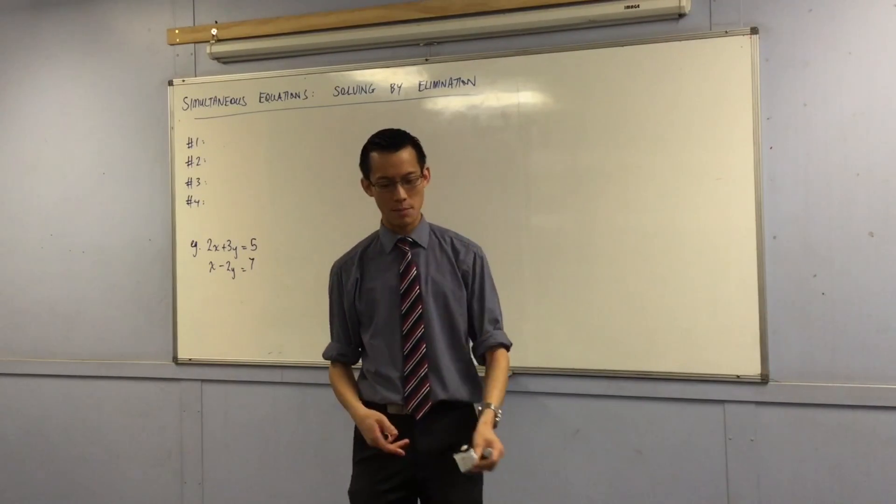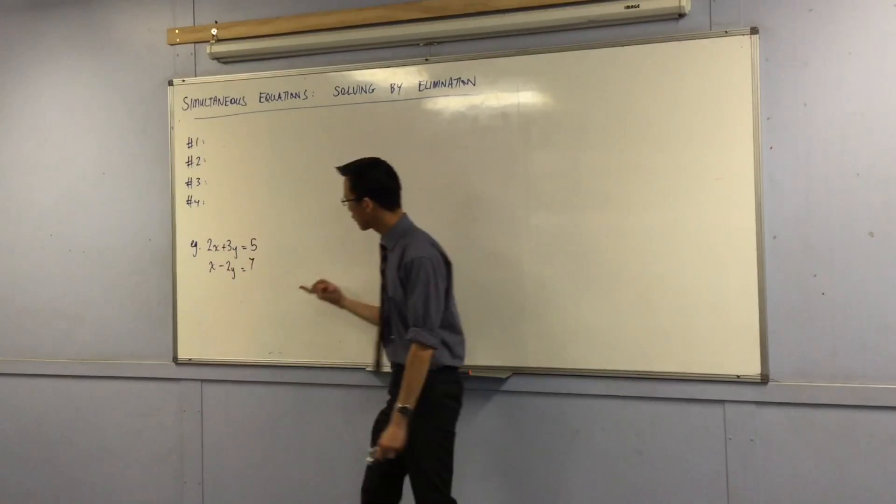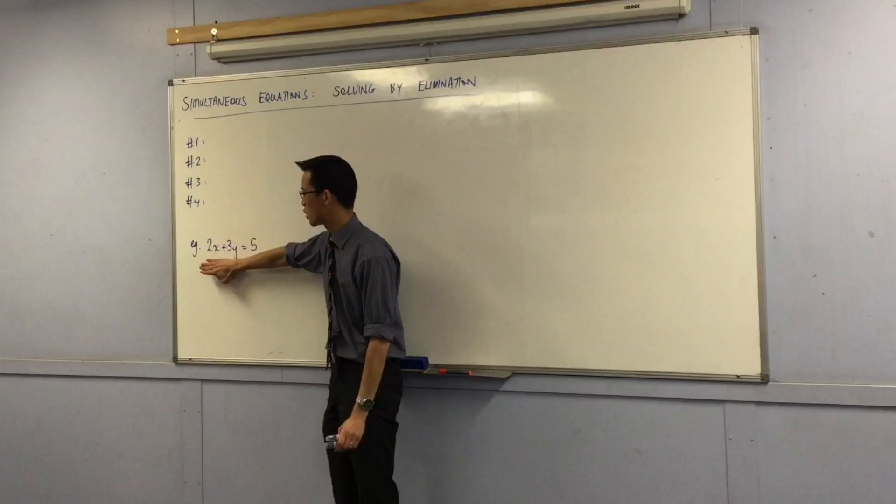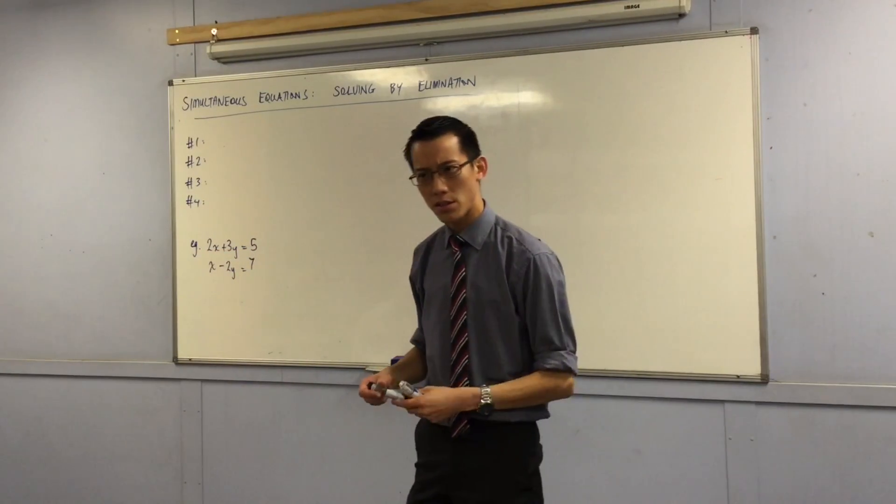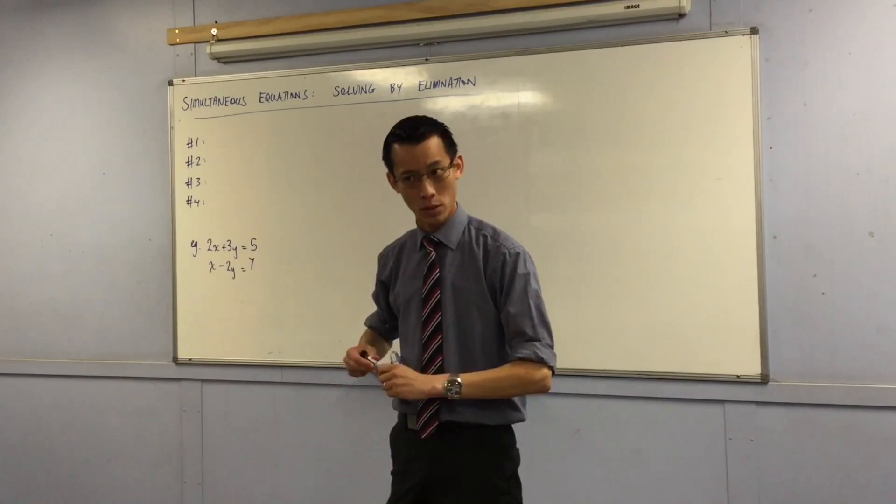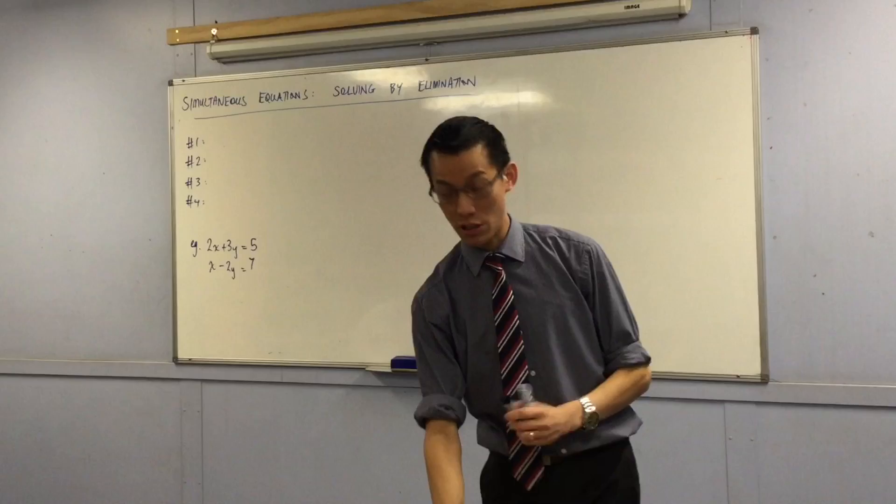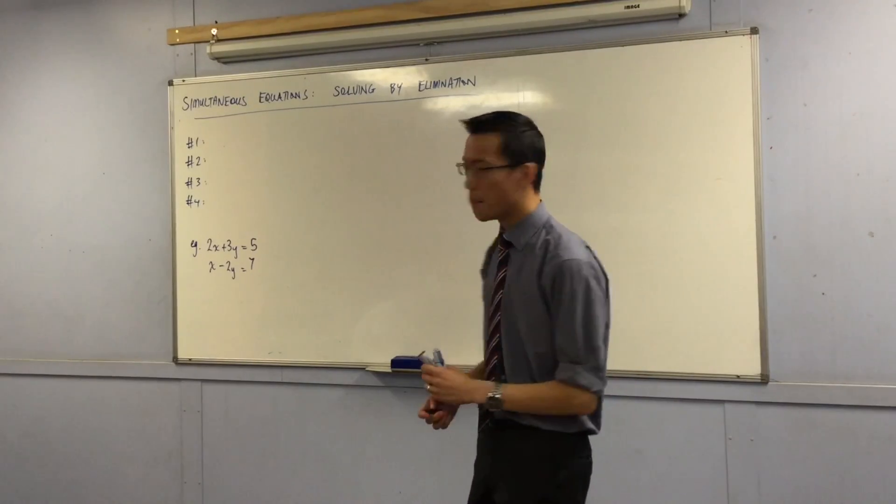You know you're going to have to solve them simultaneously because there's two letters. Can you see, for example, if I just gave you 2x plus 3y equals 5, you can't find just one solution to that. Why is that? Do you remember why you can't find just one solution to a question like that? There's two pronumerals, right?